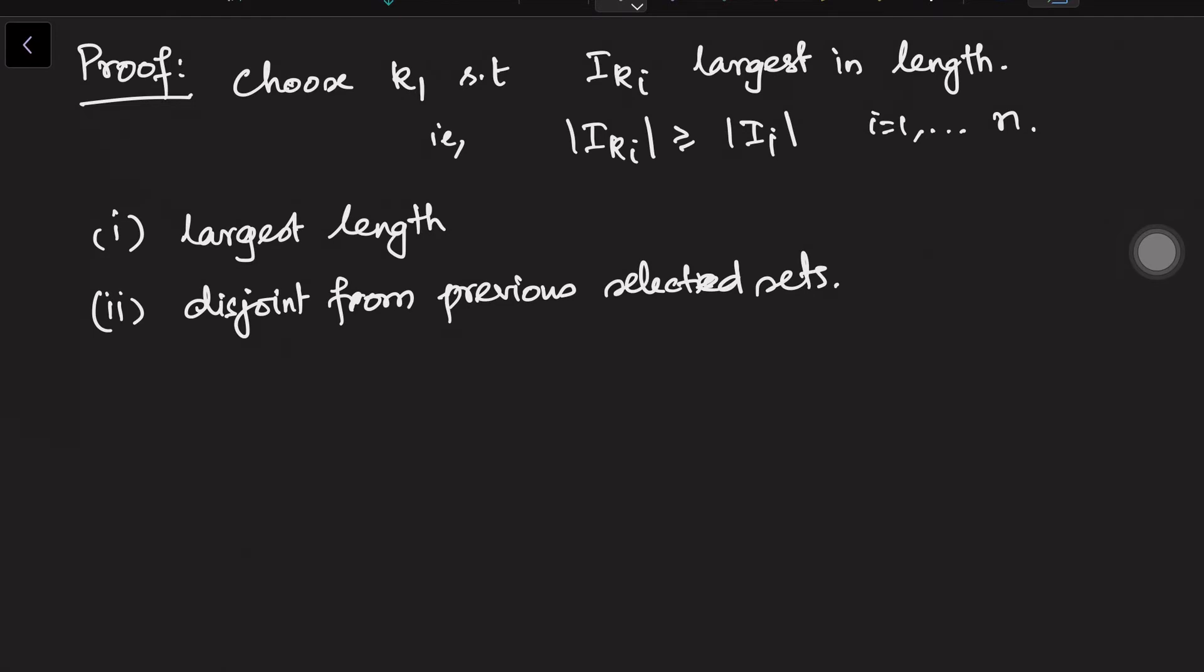So what does it mean? At stage l, if you are choosing k_l, then |i_kl| is bigger than or equal to all the sets which are surviving. And i_kl is disjoint with i_k(l-1), i_k(l-2), up to i_k1.